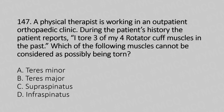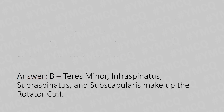Now let's move to question number 147. A physical therapist is working in an outpatient orthopedic clinic. During the patient history, the patient reports tearing three of four rotator cuff muscles in the past. Which of the following muscles cannot be considered as possibly being torn? Options include teres minor, teres major, supraspinatus, and infraspinatus. The answer is Option B, teres major. Explanation: teres minor, infraspinatus, supraspinatus, and subscapularis make up the rotator cuff.